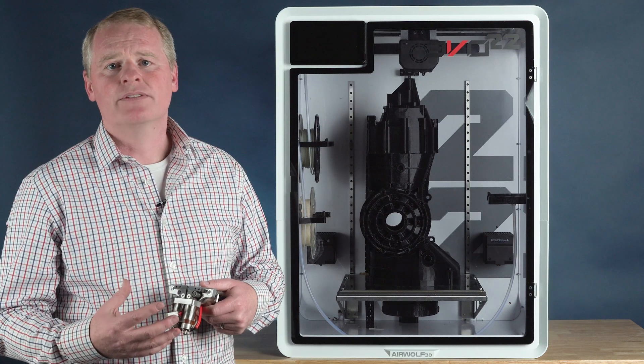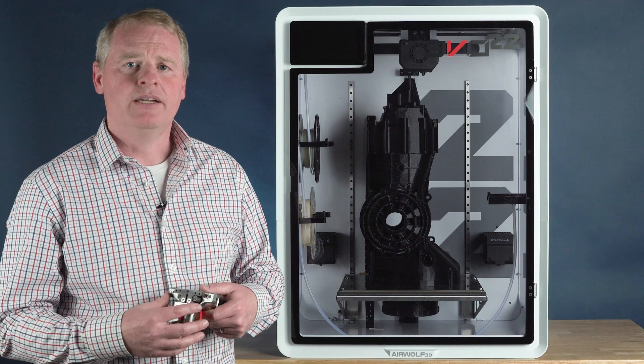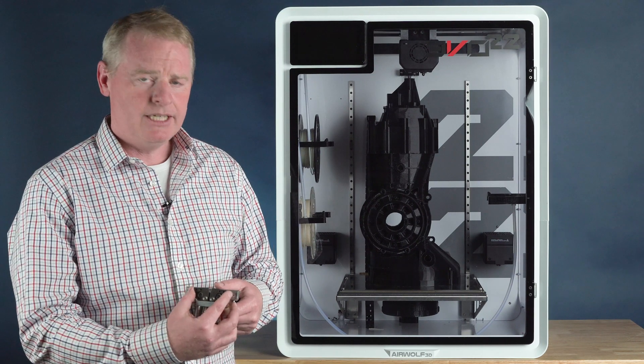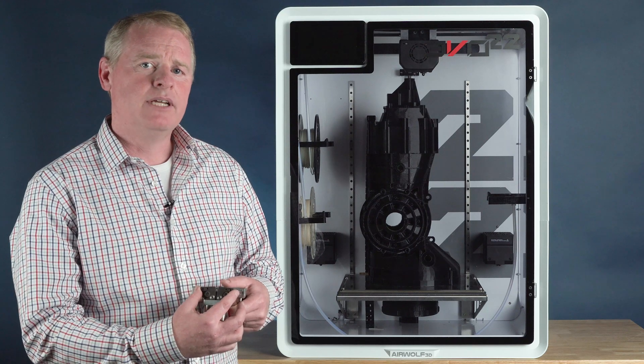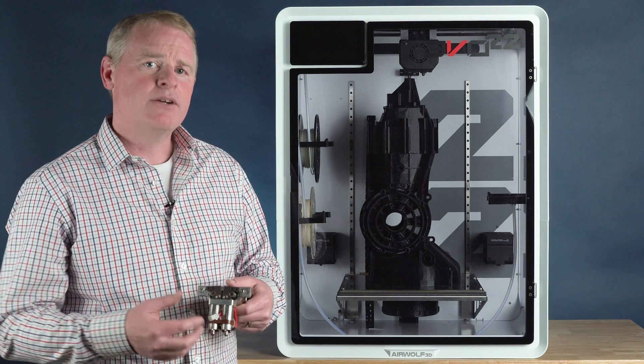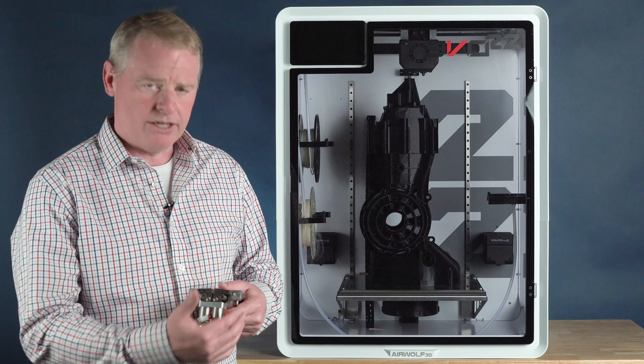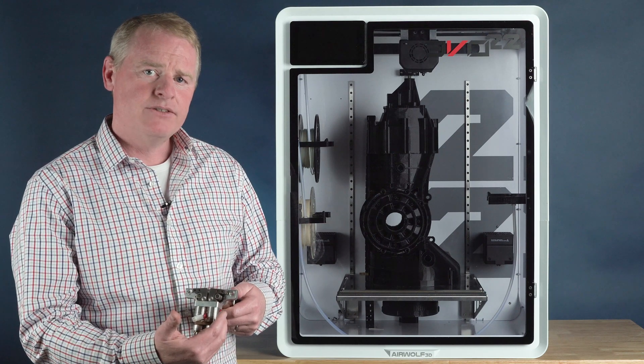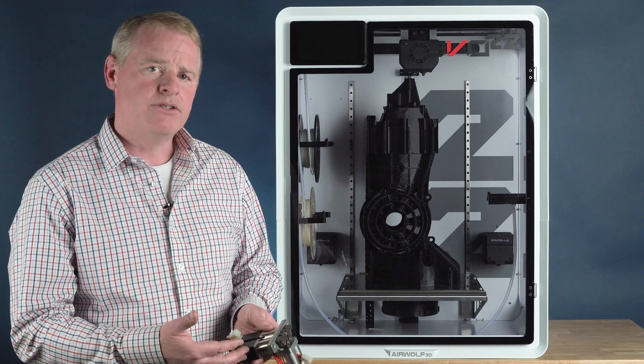We've made significant improvements over the original Evo hotend by increasing the rigidity of the unit, machining independent Delrin and PTFE feeders, and creating several cooling channels through the hotend to cool both the radiators and the planetary drive motors.